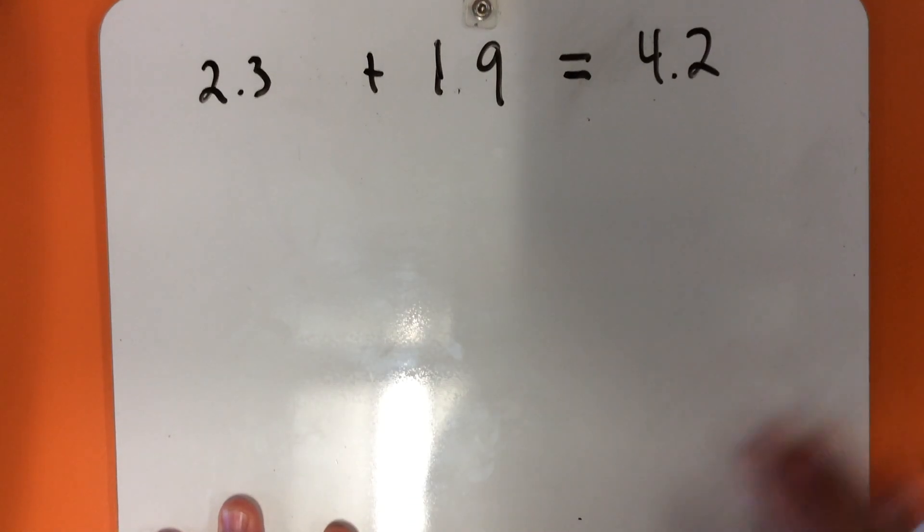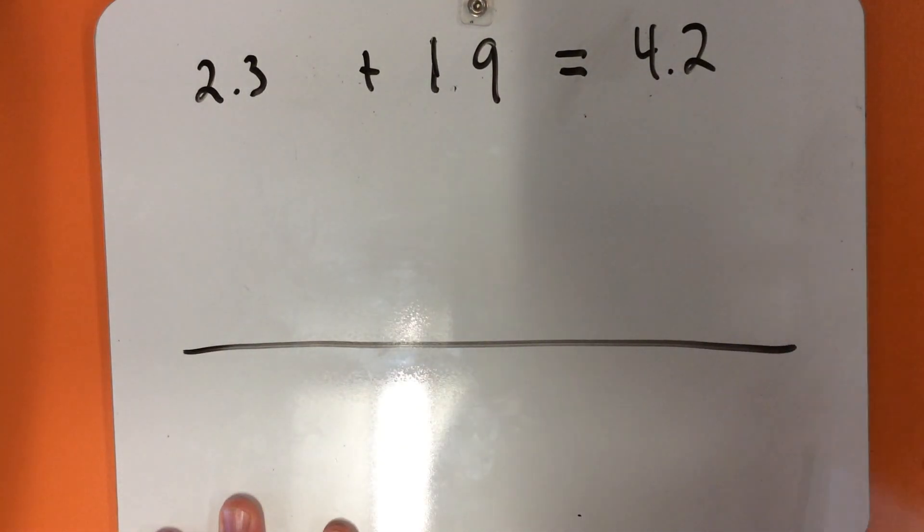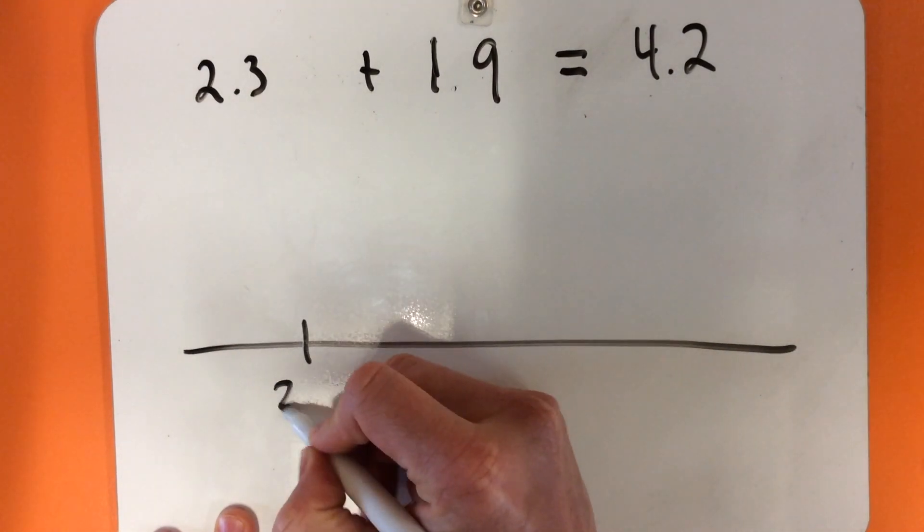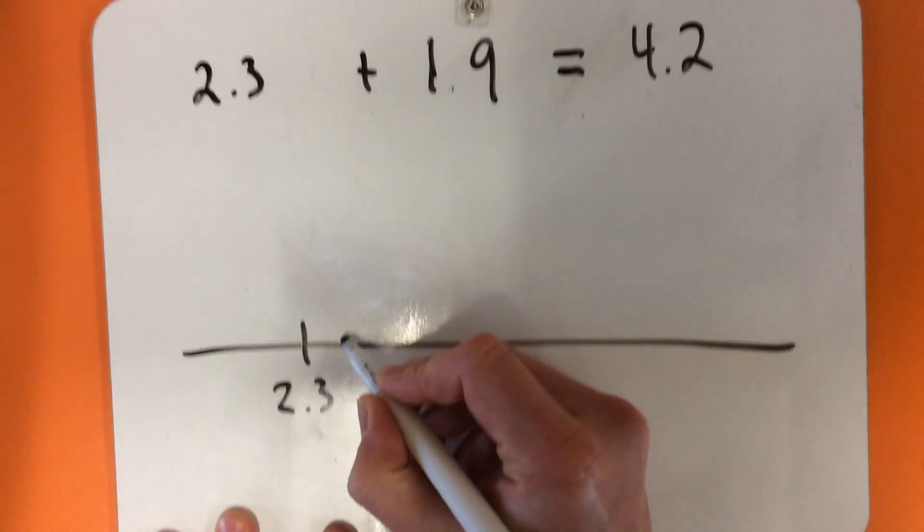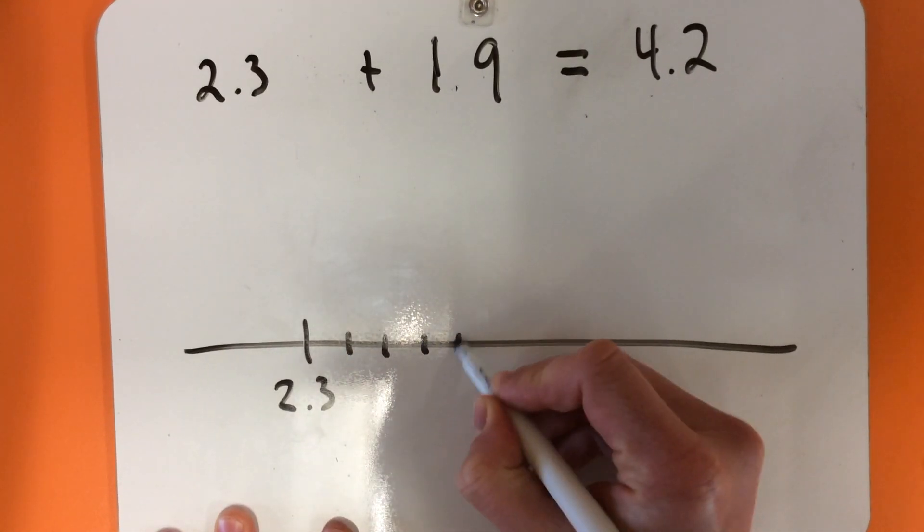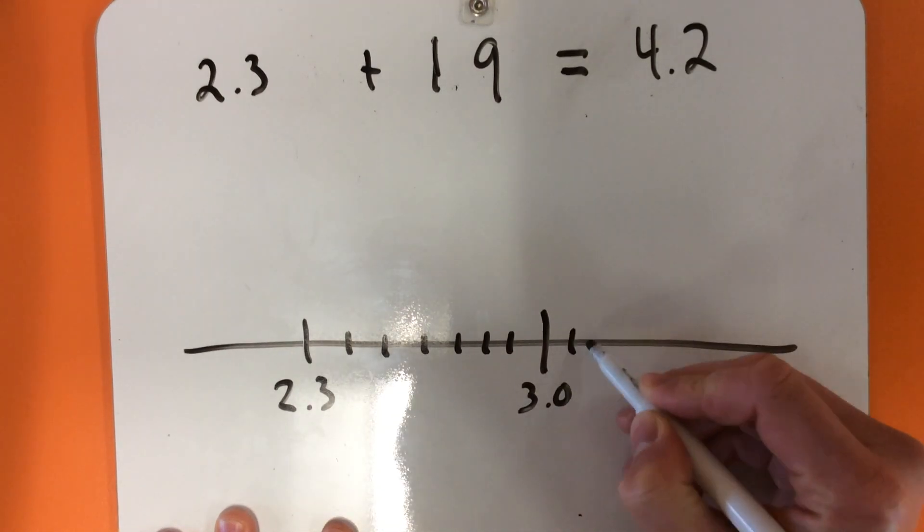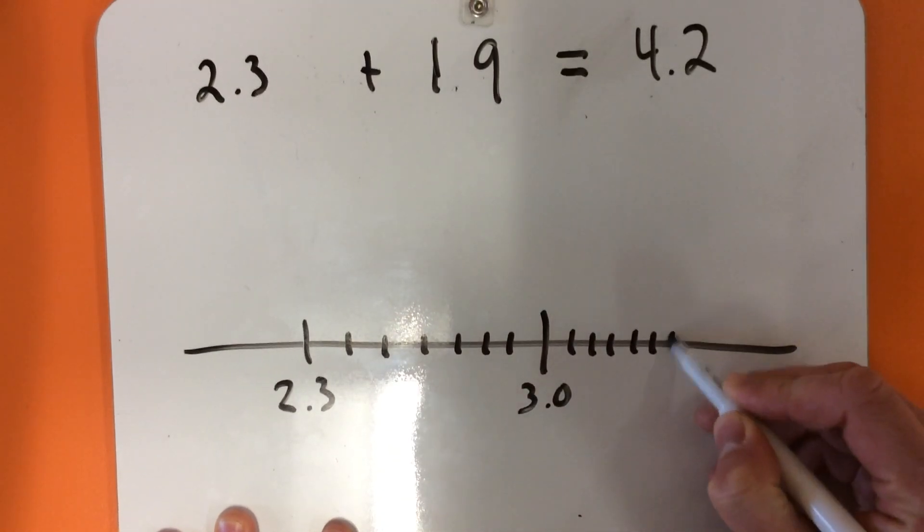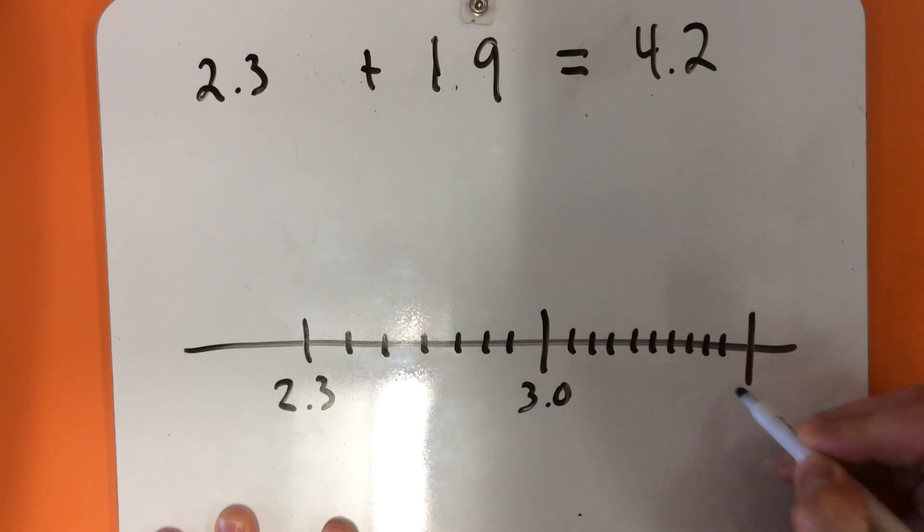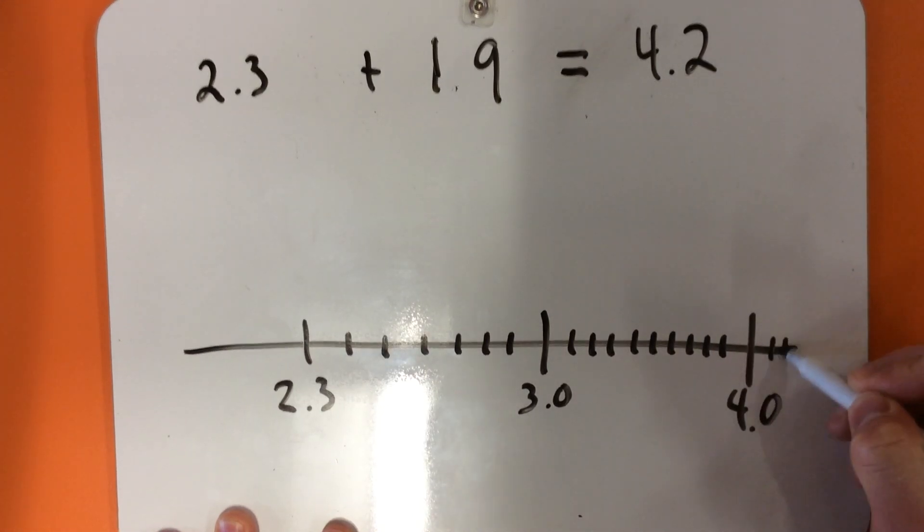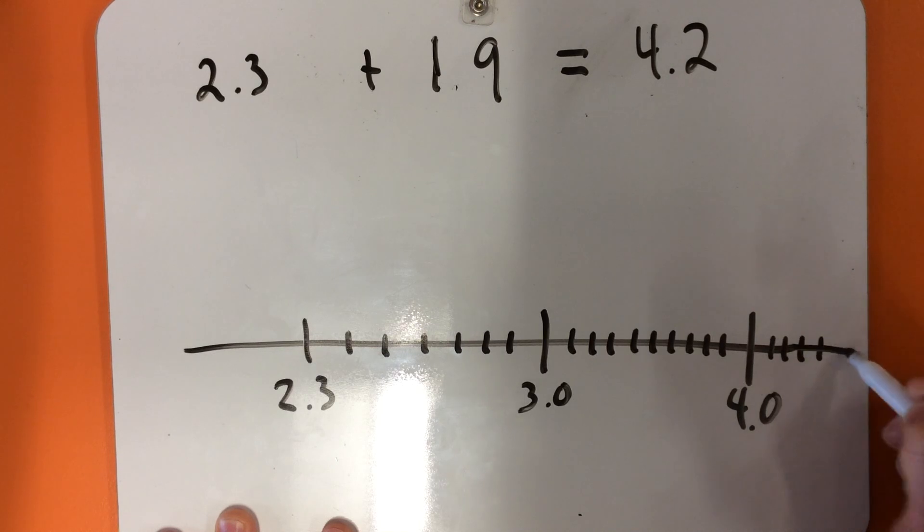Another way that I can do this is if I make a number line. I start my number line at 2.3, then mark intervals through 3.0, 3.1, 3.2, continuing up to 4 and through to 5.